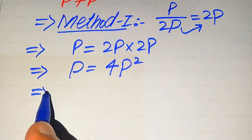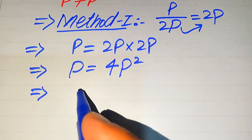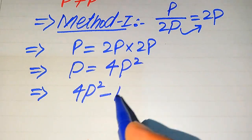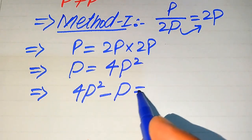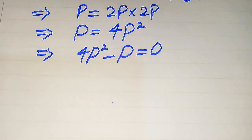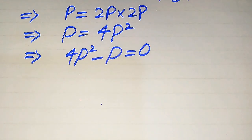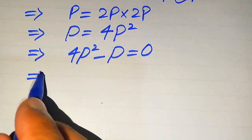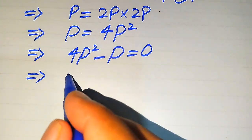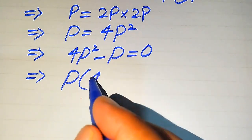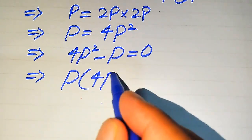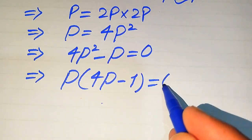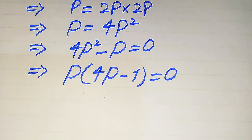In the next step, we move this p to the right-hand side, giving us 4p squared minus p equals 0. Then we take common factor p from both terms, which gives us p times (4p minus 1) equals 0.